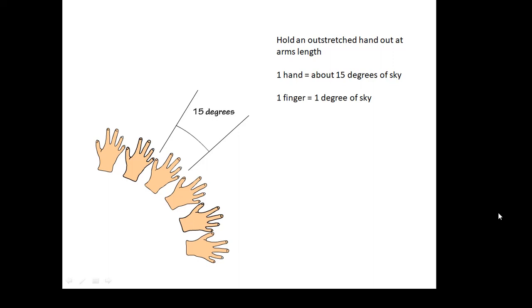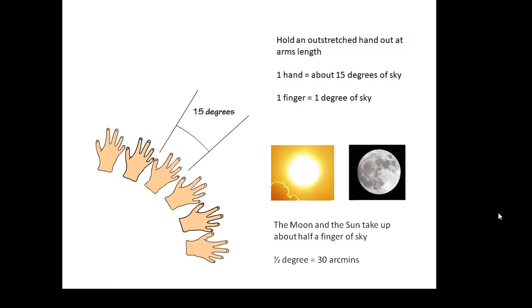Before we talk about field of view, something very useful. If you hold out a hand at arm's length, and you spread your fingers, then the angle that that makes in the sky is about 15 degrees. And the angle that one finger makes is about one degree. And this is useful, because when we talk about how objects appear in the sky, and what kind of angle they take up in the sky, then it's a useful way of thinking about it. If I was to say to you that if you look at the moon and the sun in the sky, then they take up about half a finger. You can cover them up with one finger. And that's because the angle that they appear in the sky, the angle they subtend, is about half a degree, which is about 30 arc minutes. There are 60 arc minutes in a degree.